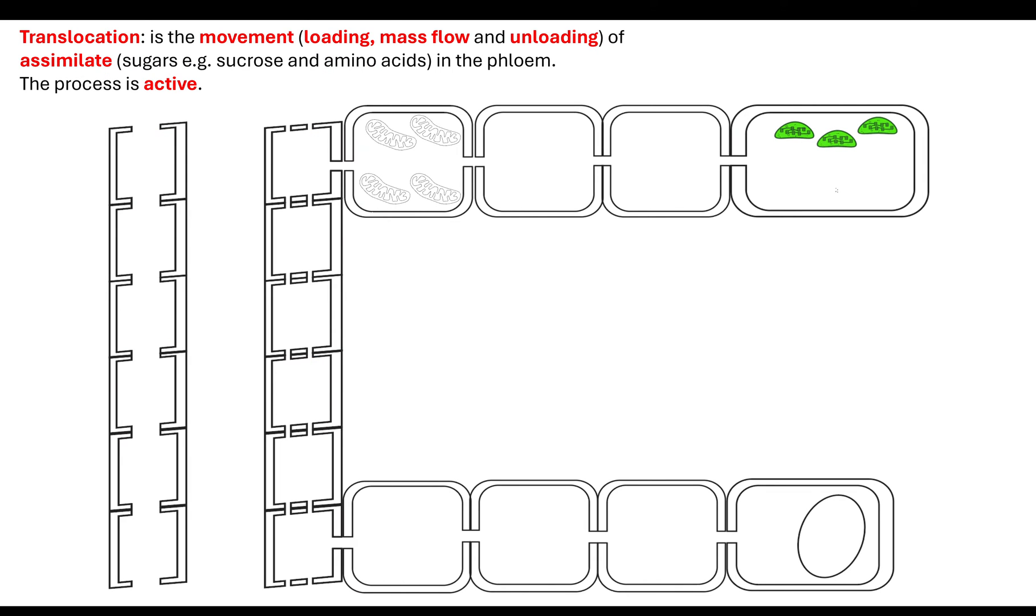Translocation is the movement, which is loading, mass flow, and unloading of assimilates. The assimilates you need to know are things like sugar, in this case sucrose, and also amino acids. But in the exam, they're probably going to ask you specifically to describe sucrose. The movement of sucrose in the phloem is an active process.